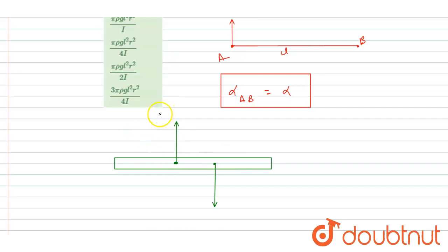The buoyant force has nothing to do with that. It will act at the removed water's center of mass. So you can see there is a perpendicular distance of L by 4 for the line of action of this buoyant force.